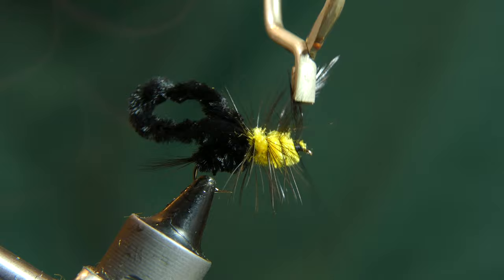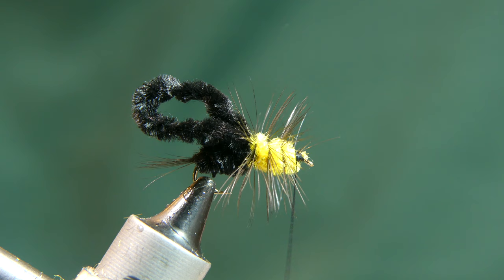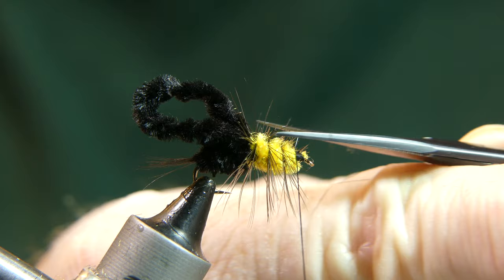When I palmered the hackle, I made sure the dull side was facing forward. That way the legs stick straight down and do not sweep back. Go ahead and trim the hackle on top of the fly to clean it up a little bit.